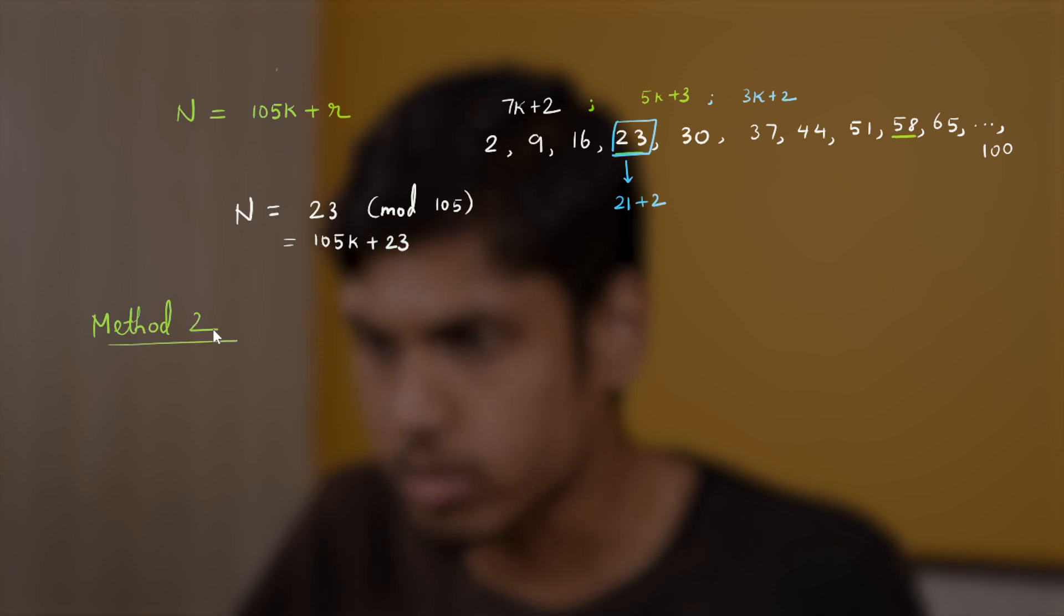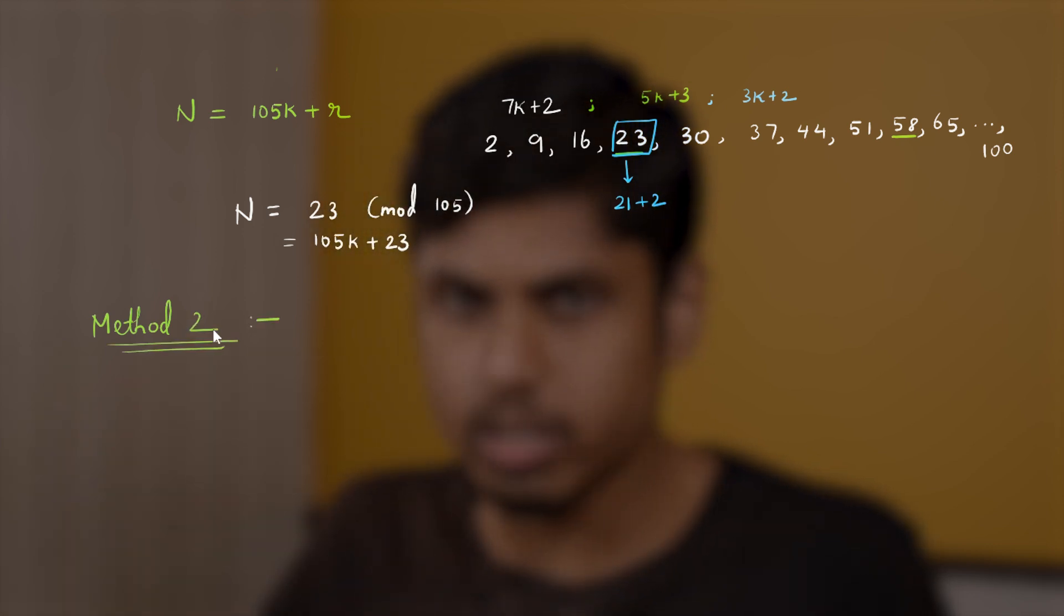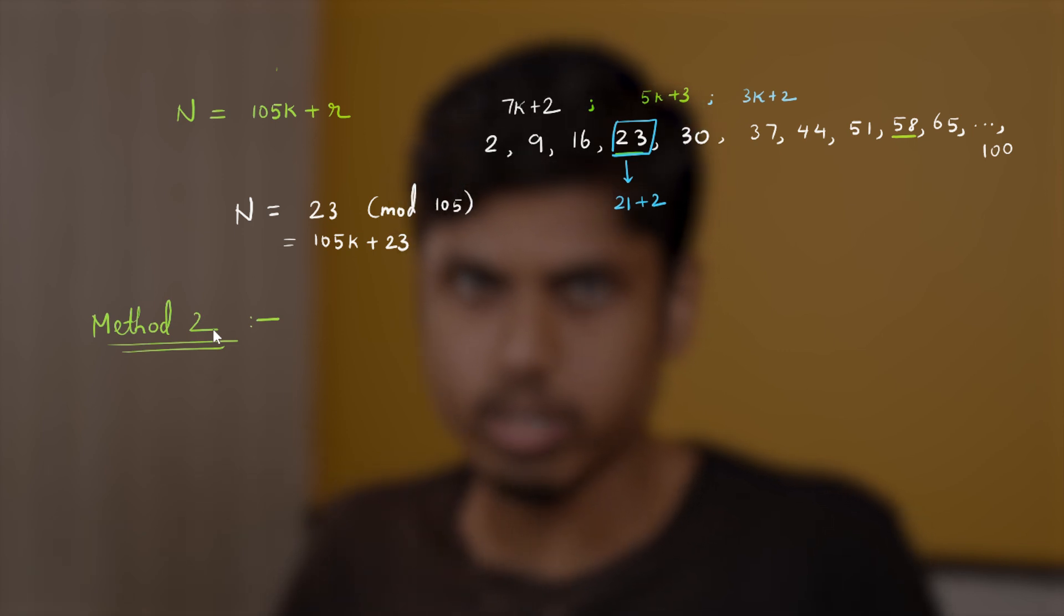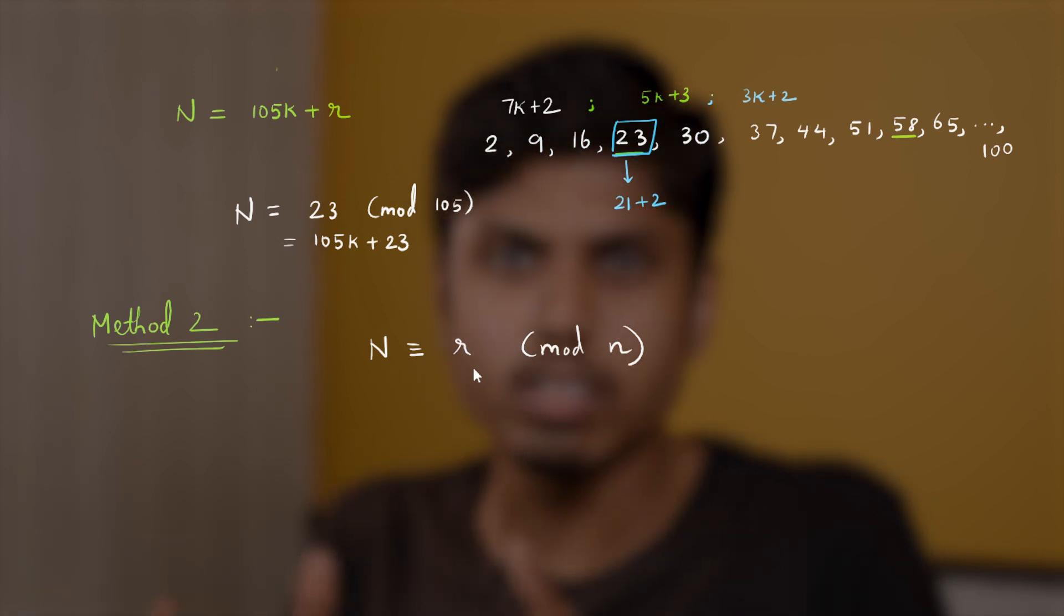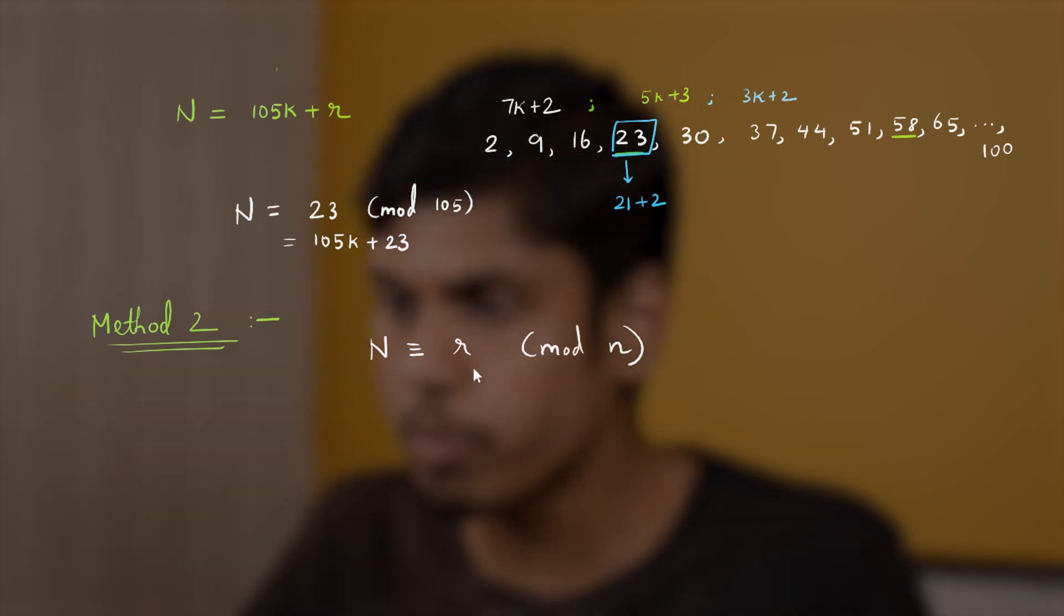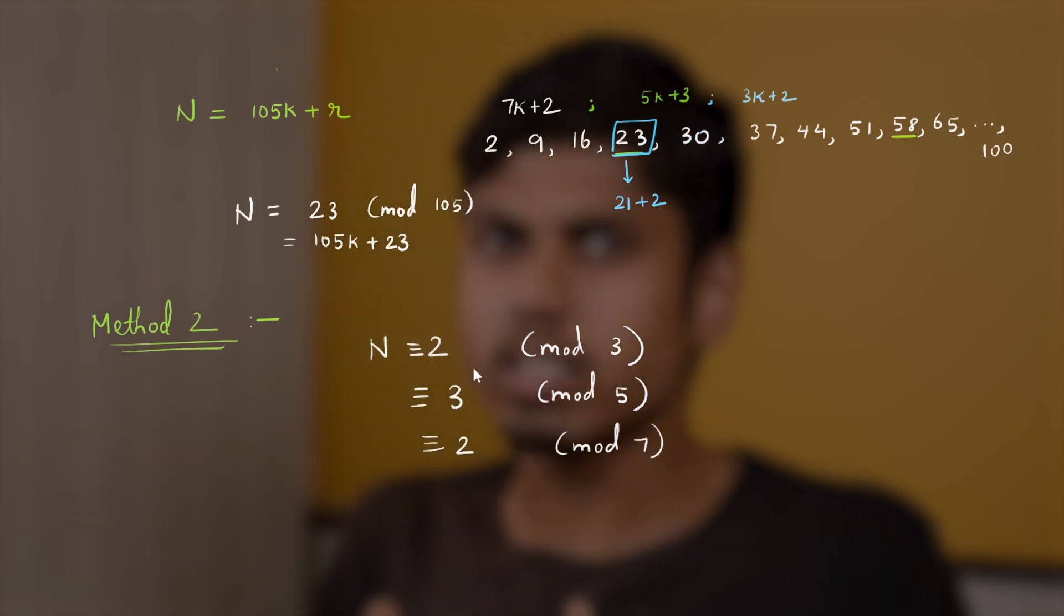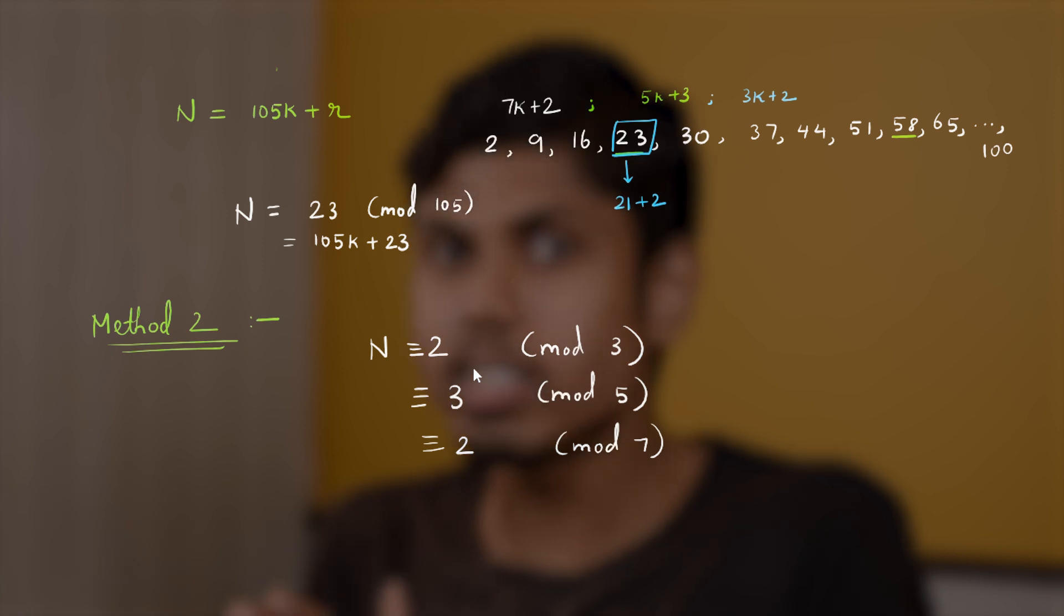So we know a certain number leaving a remainder of r modulo certain number can be expressed n is congruent to r mod n. And let's express our conditions in this format. So n would be congruent to 2 mod 3 and simultaneously it must be congruent to 3 mod 5, and it should also be congruent to 2 mod 7. Notice that there is a subtle difference between the remainder that it leaves and congruences. There is a usual misconception by students that congruences should represent the remainder.